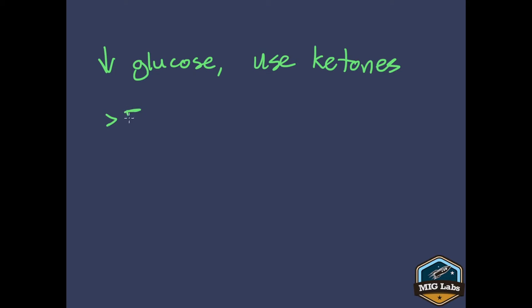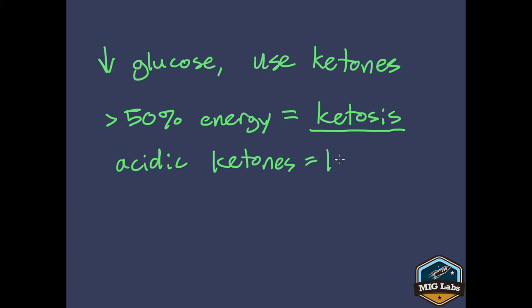So when there's low glucose getting into the cells, we can start using ketones instead. And ketones are just molecules that the liver breaks down. They break fat and proteins down into ketones when there's a shortage of glucose. It's a backup energy source. We're not normally using ketones. But in a pinch, they can use ketones as an alternative to glucose. Now, if the body is getting more than half of its energy from ketones, we have a term for that. We call that ketosis. The body is in ketosis. More than half of its energy is coming from ketones. And most of the ketones that the body uses for energy are also acidic. We call those ketoacids.